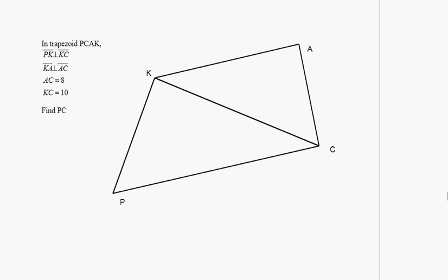Here we have trapezoid PCAK. PK is perpendicular to KC, KA is perpendicular to AC. AC is 8, KC is 10.